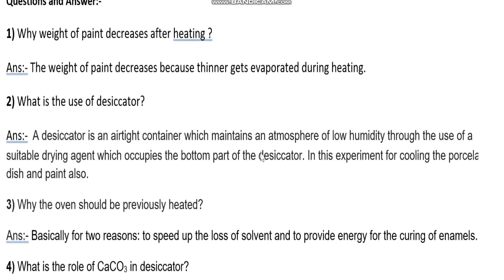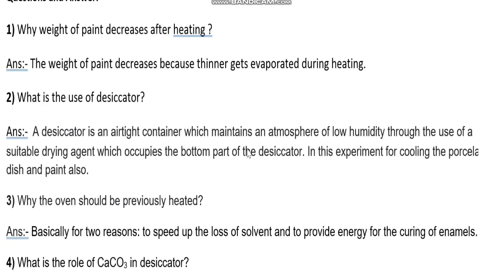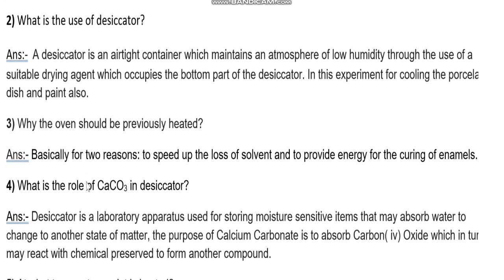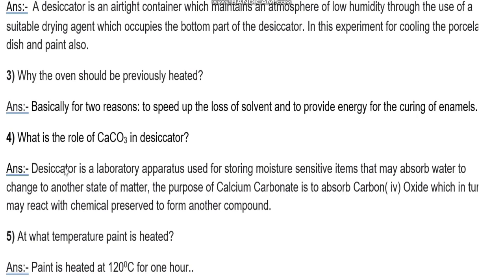What is the use of a desiccator? A desiccator is an airtight container which maintains an atmosphere of low humidity through the use of a suitable drying agent occupying the bottom part of the desiccator. In this experiment it is used for cooling the porcelain dish and paint. Why should the oven be previously heated? For two reasons: to speed up the loss of solvent and to provide energy for the curing of enamel.